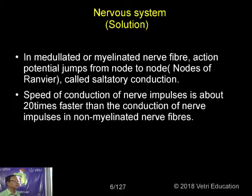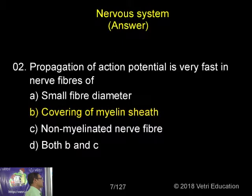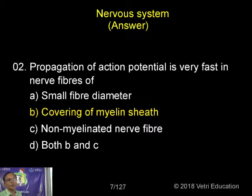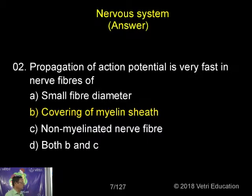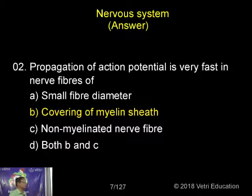That is why the rate of conduction of impulses is faster in nerve fibers covered with myelin sheath. In non-myelinated nerve fibers, there is no myelin sheath, so the speed of conduction is less because impulses are conducted in the form of streaming movement.